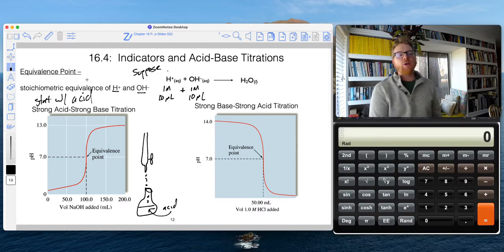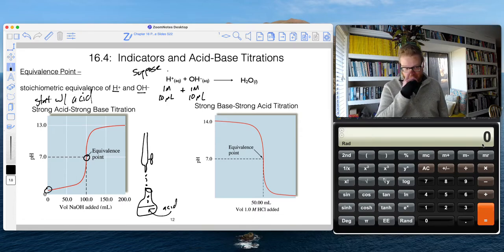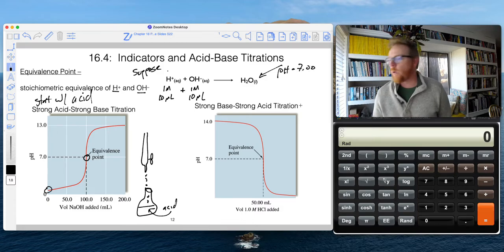So if we were starting with acid, then we recognize at zero volume of NaOH added, we would have a really acidic pH, right? Because we're starting with acid. And as we drip that hydroxide in, the pH will increase steadily and then will ramp up exponentially in the vicinity of the equivalence point. And for strong acid, strong base, that equivalence point will be pH 7.0 because we're making ordinary water.